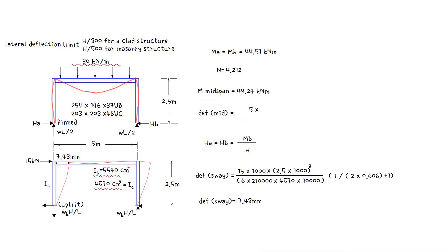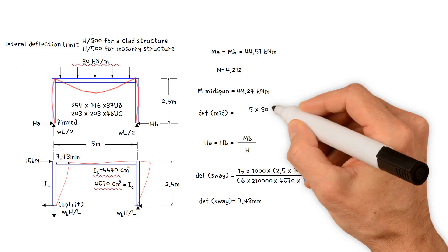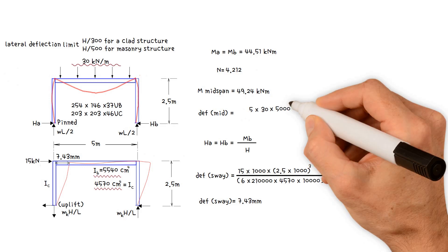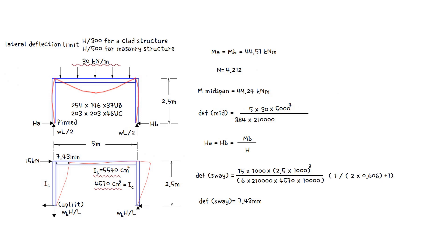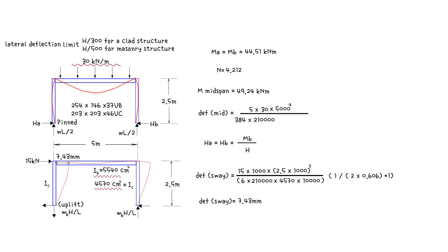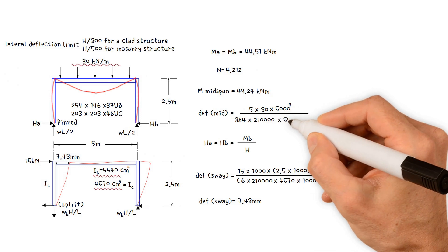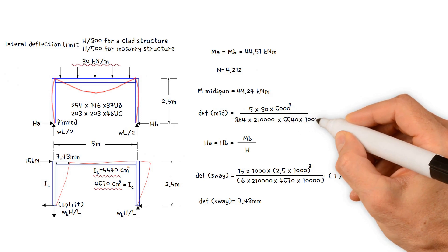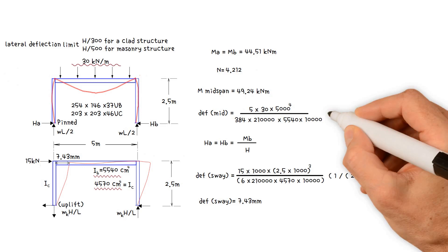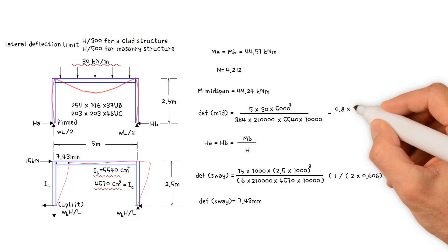Therefore, 5 times vertical loading on beam 30 kilonewtons per meter times span 5,000 millimetres to 4 divided by 384 times 210,000 times beam moment of inertia 5,540 centimetres to 4 times 10,000 to convert it to millimetres, minus 0.8 times 2 times beam end moment 44.51 kilonewtons meters times 1,000 by 1,000 to convert it to newton millimetres.